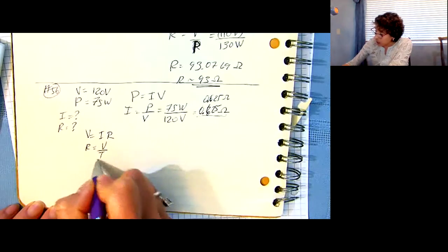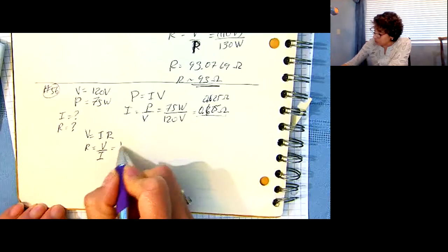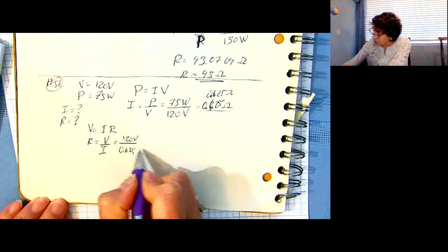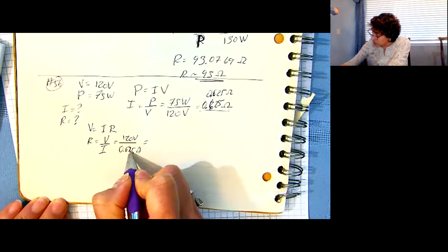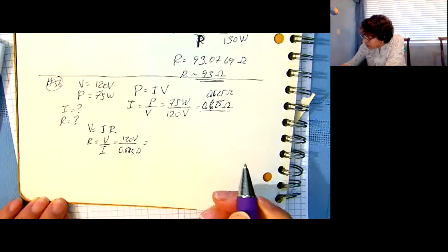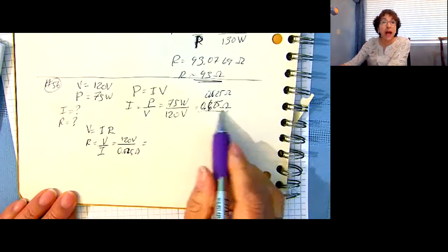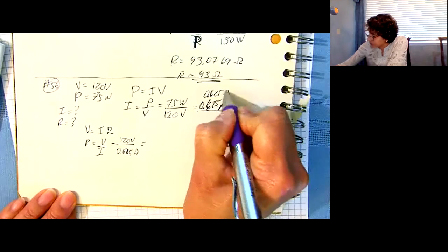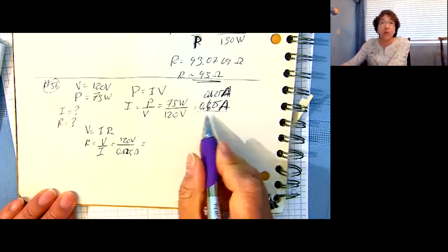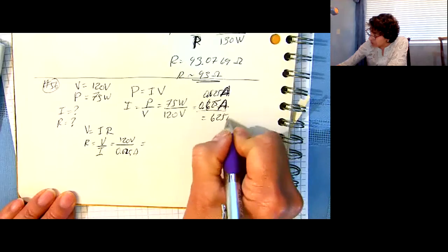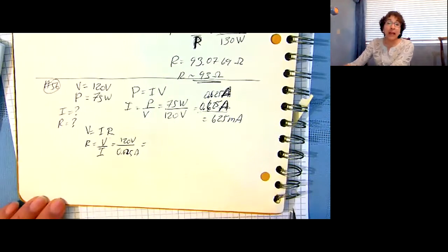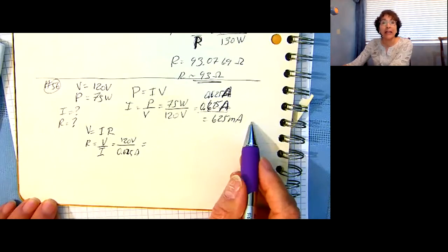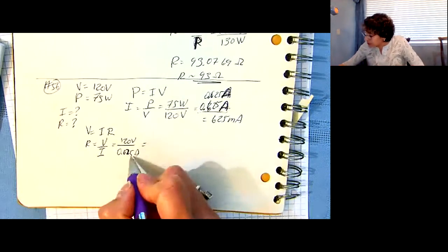So V equals IR, so R must be V over I. So the voltage, 120 volts, and I have 0.625 amps, or 625 milliamps. Current is amps, so I'm right, this is 625 milliamps. And please make sure you know how much can kill you, that's a good thing to know. This is getting kind of high here, 625 milliamps. So I take this, this is amps.